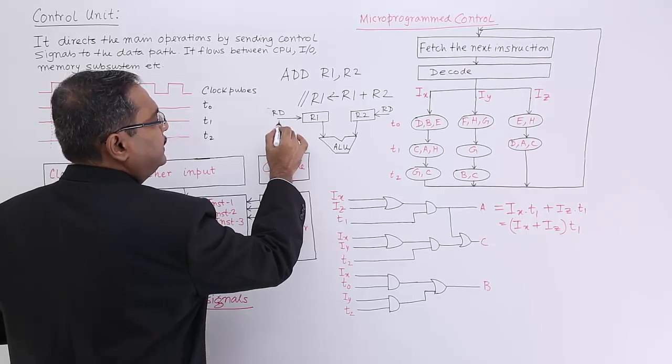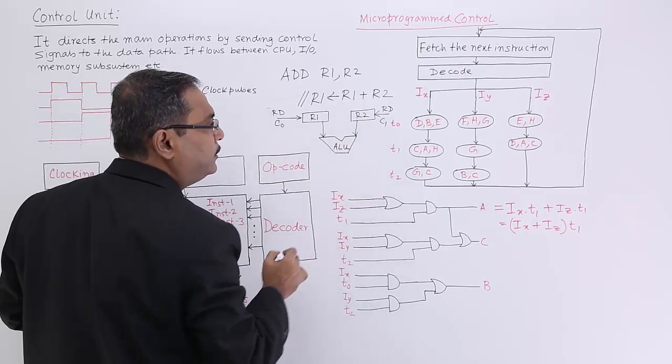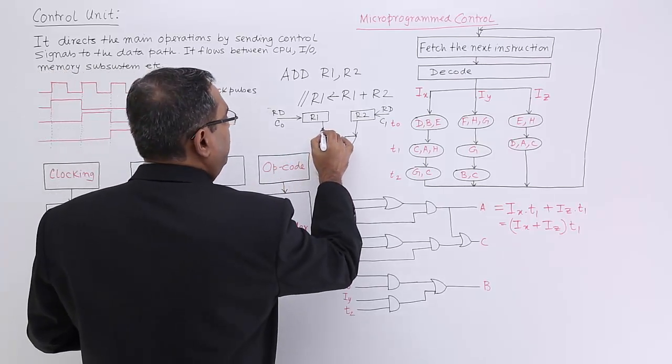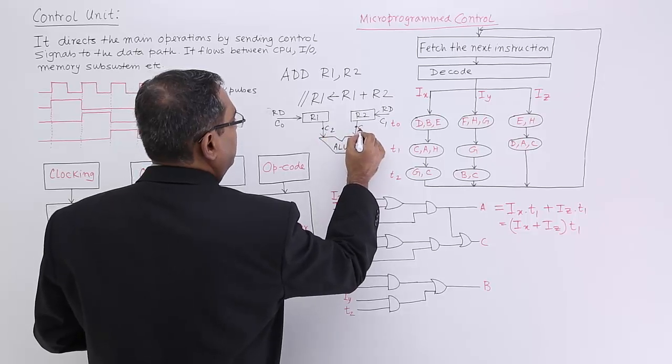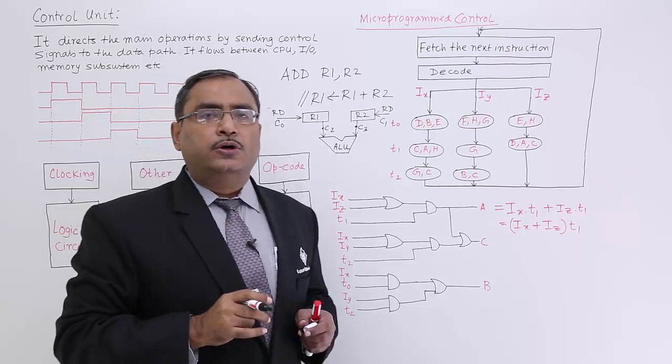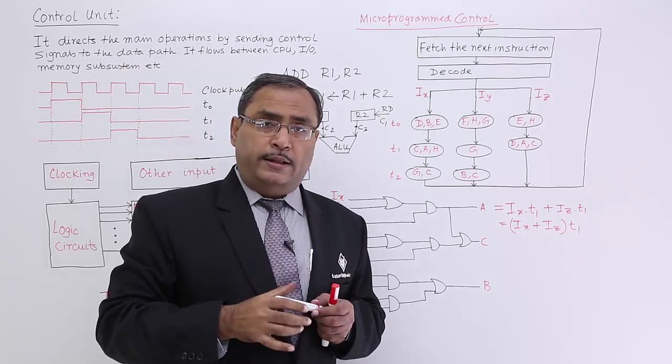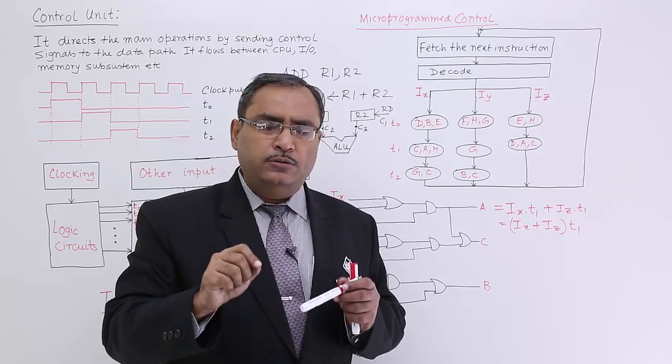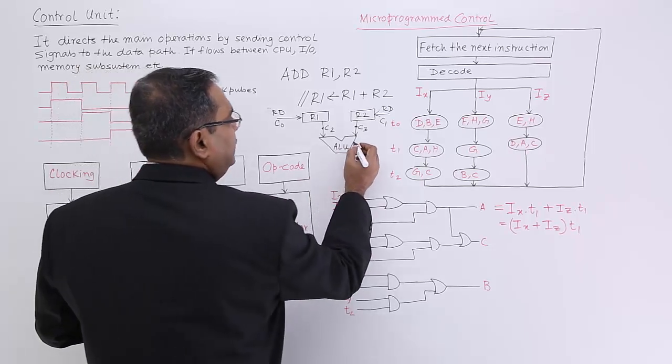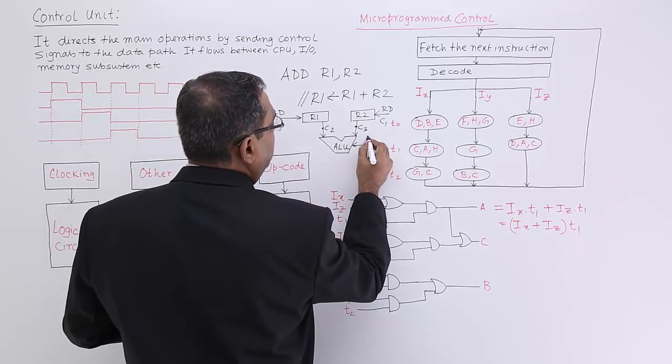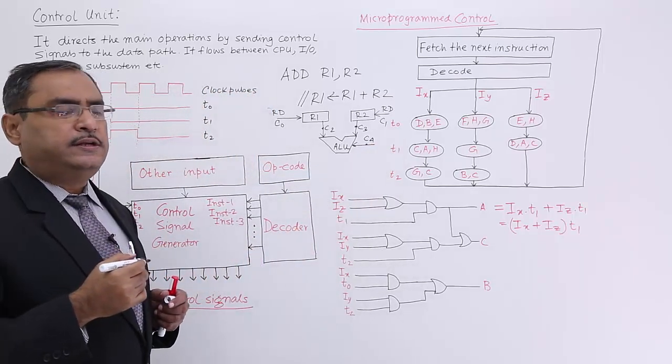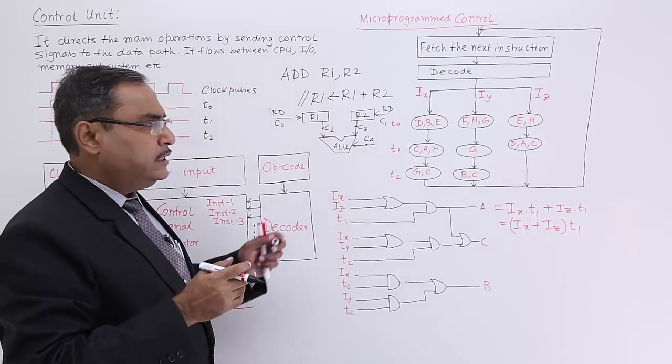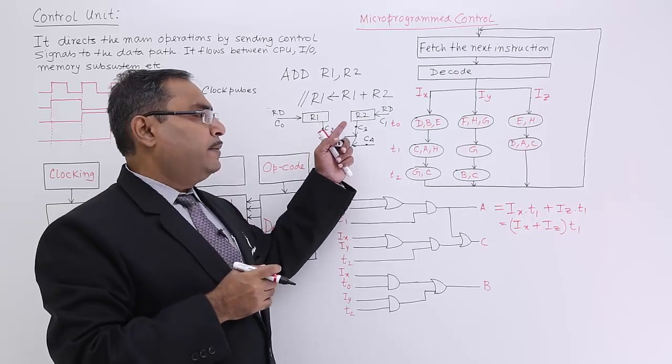First time this control signal, say C0 and C1, will be enabled to make the registers to be selected in the read mode. Next time, say C2 and C3, these two control signals will be enabled to make the data path enabled so that register 1's content and register 2's content must be available to the inputs of the ALU. Then the ALU should get enabled by the control signal C4. So ALU will do the sum of R1's content and R2's contents because the contents are available through the data paths.